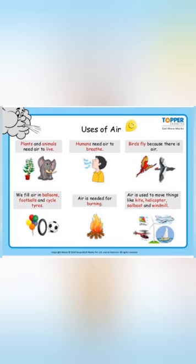Air is used to move things like kites, helicopters, sailboats, and windmills — so in all aspects of our life, air is equally important. To improve the quality of air, we must plant more and more trees in our surroundings to have fresh air. We cannot afford air pollution because air is polluting day by day, so we must plant trees to keep our air fresh.